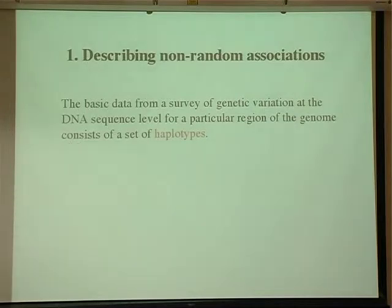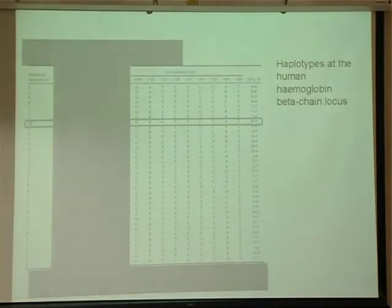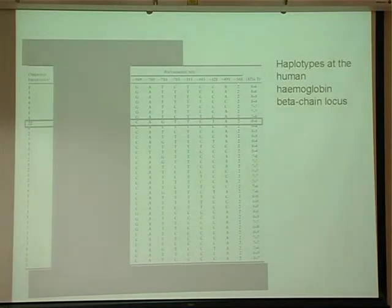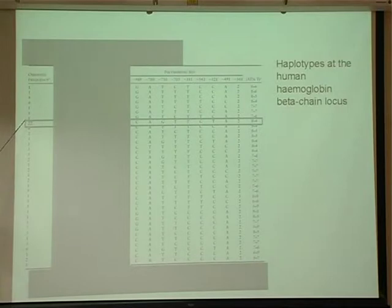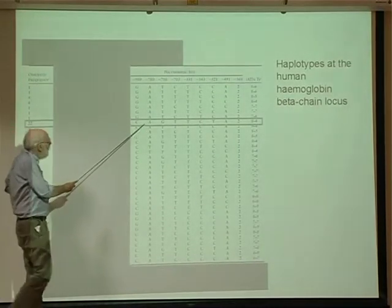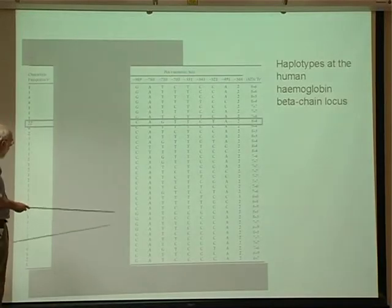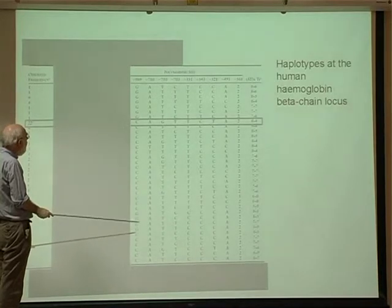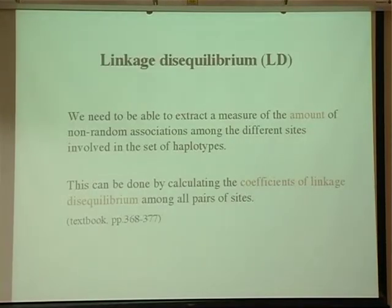What we get is a set of haplotypes—basically just a list of the states of any variable nucleotide sites in the bit of genome that we're looking at. Here's an example from the hemoglobin beta chain locus, where only the variable sites are listed. One haplotype dominates the sample: 22 out of the haploids collected have the same sequence. As you can see, there tend to be associations between variants at different sites. This is what's called linkage disequilibrium, or LD.